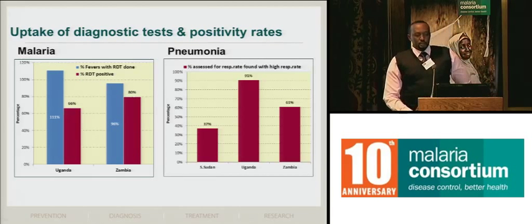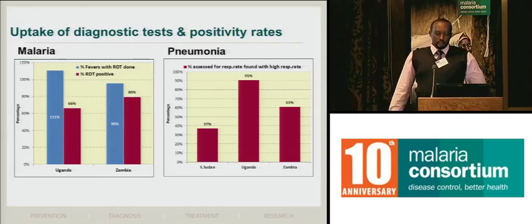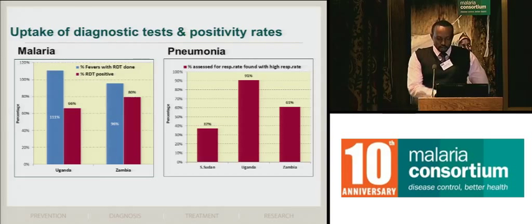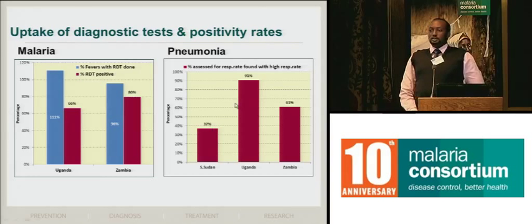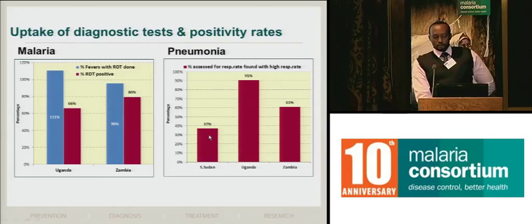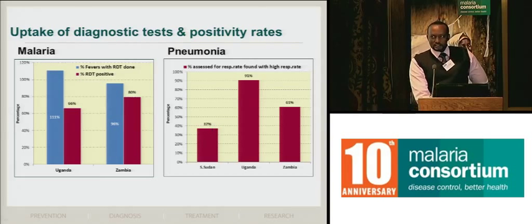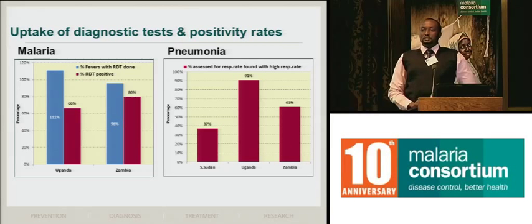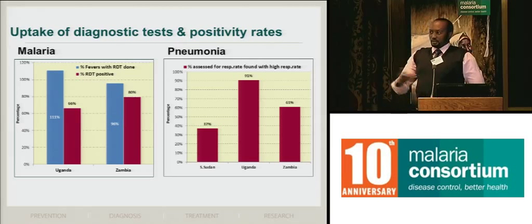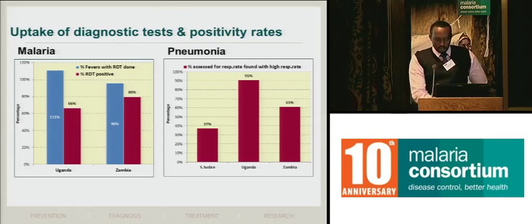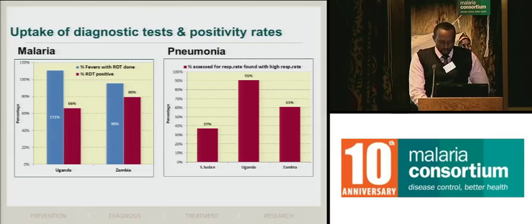Moving on to pneumonia: the respiratory rates measured show 91% in Uganda turn out to be high. In South Sudan, only 37% of those who've had a respiratory rate done is reported as high — this is from routine data. In Zambia it's about 61%. There are implications for the South Sudan case, of course.